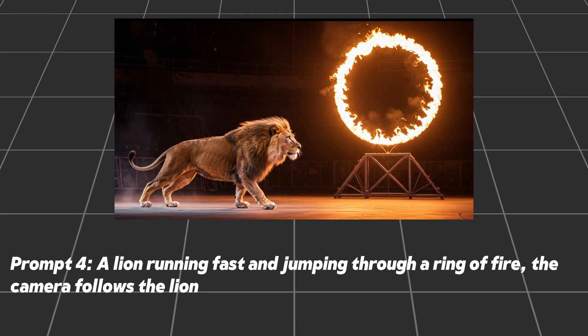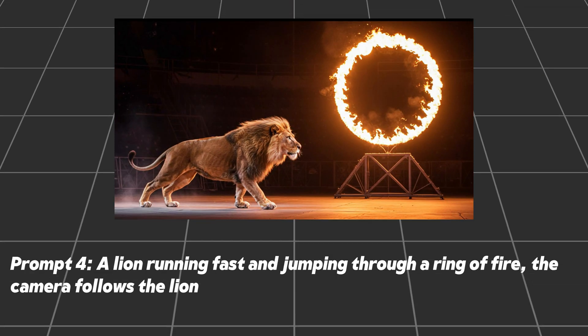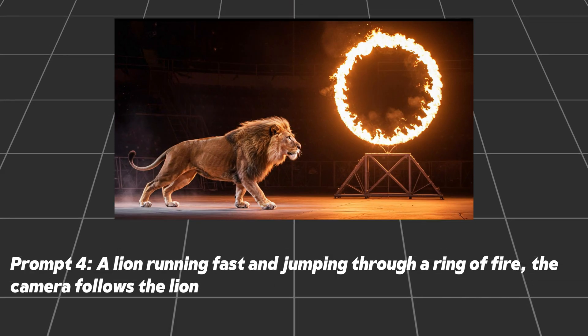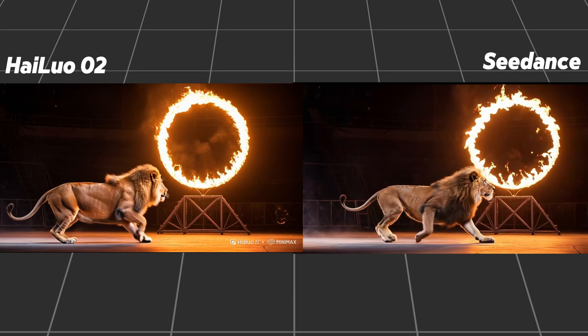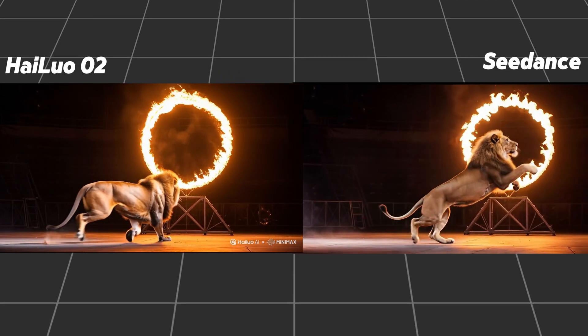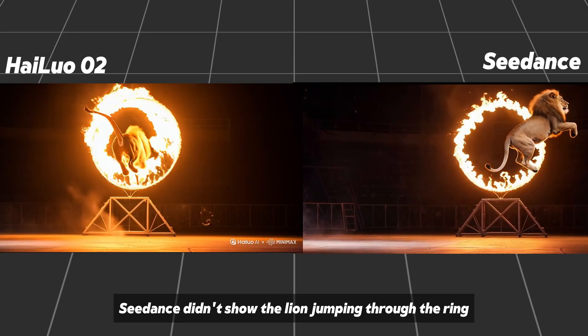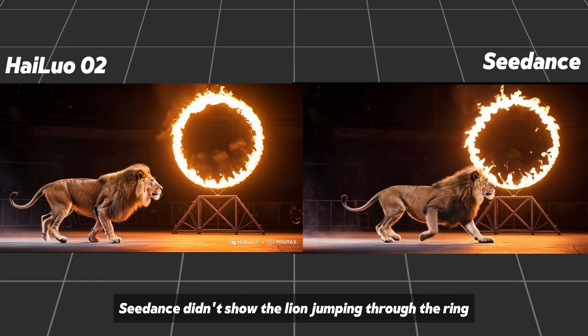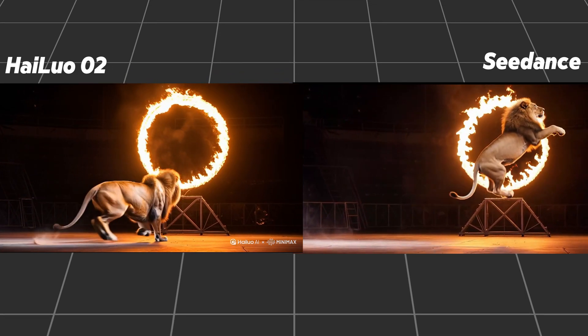Prompt 4: A lion runs and jumps through a ring of fire — camera follows. C-Dance didn't show the lion jumping through the ring, so Hilo wins again.